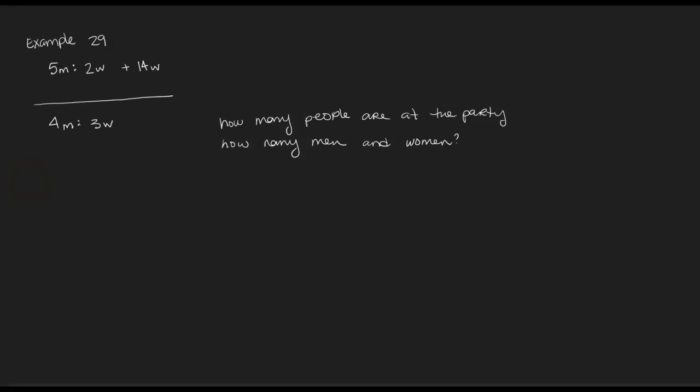We can make a connection between how the men units are changing. Notice that the number of men at the party never changed. So from these two ratios we know that the five units of men - so five units, these are the old units - have to be equal to the four units, the new units.